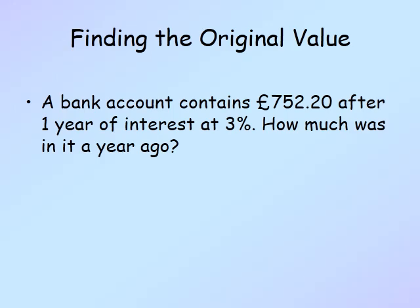Another example: a bank account contains £752.20 after one year of interest at 3 percent. How much was it a year ago? There has been an increase, therefore the multiplier must be 1.03. To get from 100 to 103 we multiplied by 1.03 — remember that is 103 divided by 100 — so we must do the opposite, which is divide.